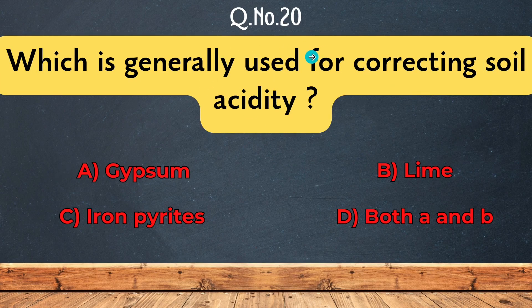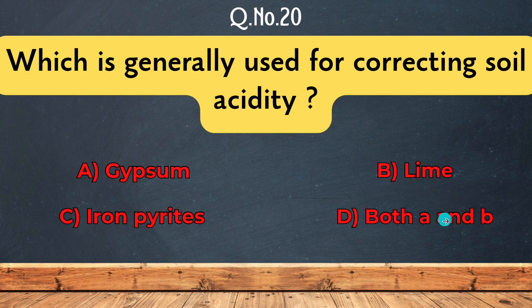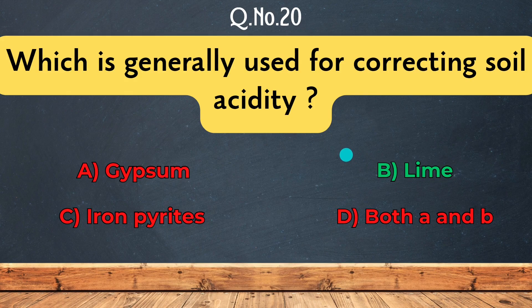Question 20: Which is generally used for correcting soil acidity? Options are Gypsum, Lime, Iron pyrites, or Both A and B. The correct answer is Lime. We use lime to balance soil acidity.